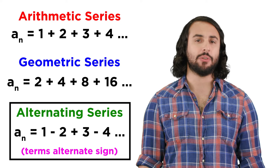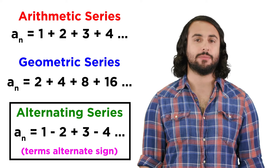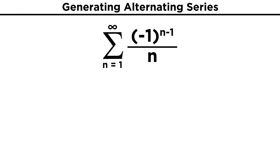How can we produce a series like this? In order to produce an alternating series, there will usually be a term involved whereby the number negative one is raised to some exponent, like n or some term with n in it. For example, take the series negative one to the n minus one power, over n, from one to infinity.